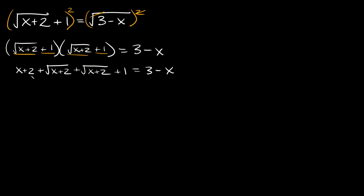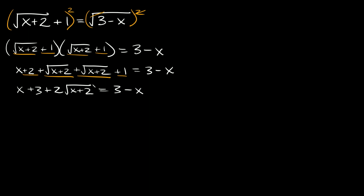Now we can combine some common terms. The x plus 2 and positive 1 combine to give x plus 3. And the two square root of x plus 2 terms combine to give 2 times the square root of x plus 2. So we have x plus 3 plus 2 times the square root of x plus 2 equals 3 minus x. We still have a radical to get rid of, but let's first eliminate as much as we can — subtract x and subtract 3 from both sides.